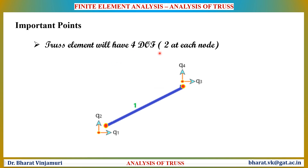A truss element will have four degrees of freedom — two degrees of freedom at each node. The element will have two degrees of freedom Q1 and Q2 at node 1, as well as Q3 and Q4 at node 2. Q1 represents the x-axis and Q2 represents the y-axis; similarly, Q3 represents the x-axis and Q4 the y-axis. Degrees of freedom are the number of unknowns to be determined in a structure, so a truss element has totally four unknowns, also called displacement vectors.